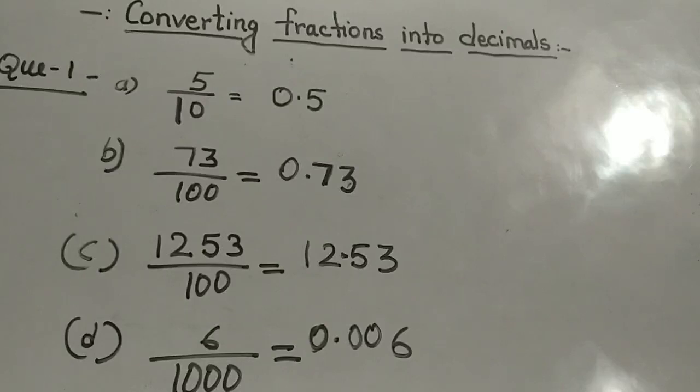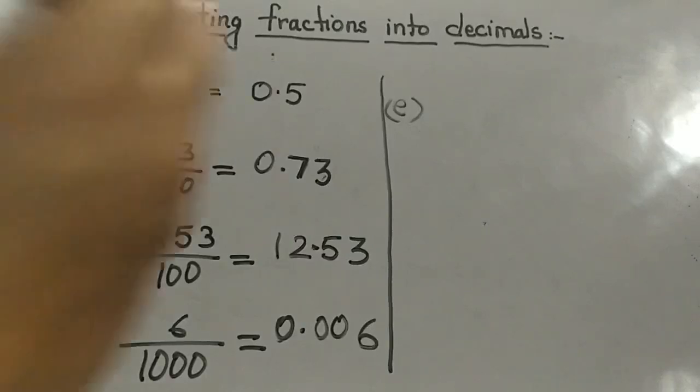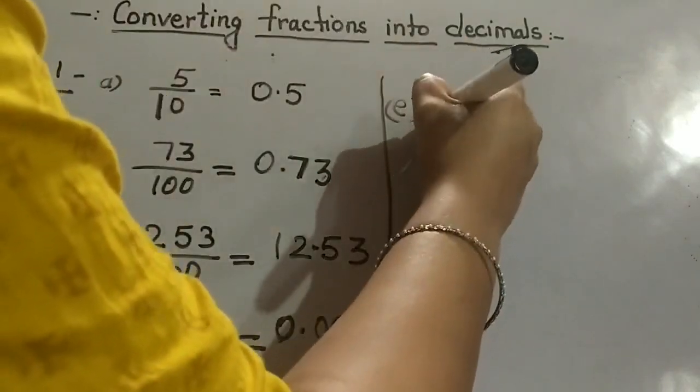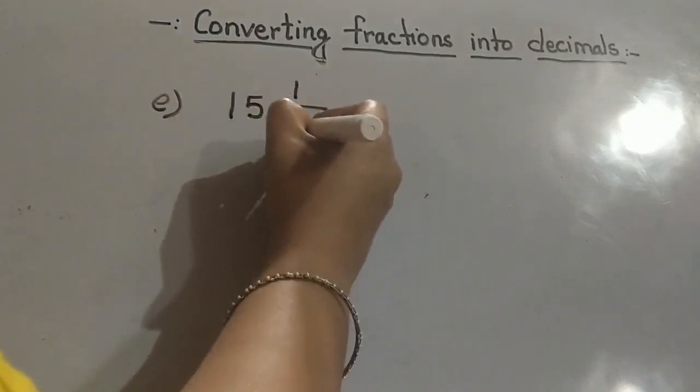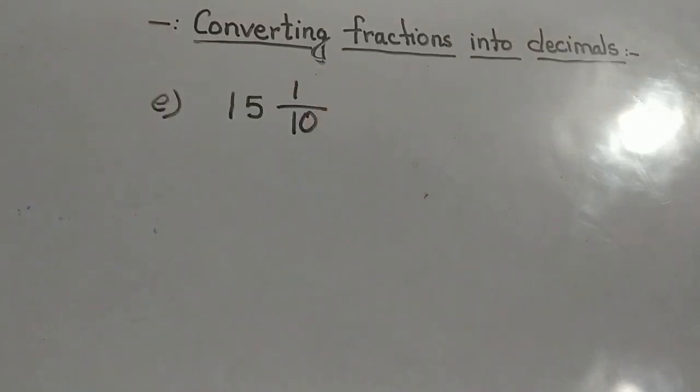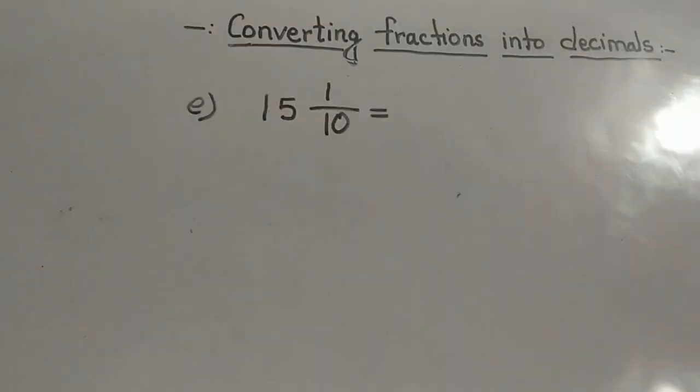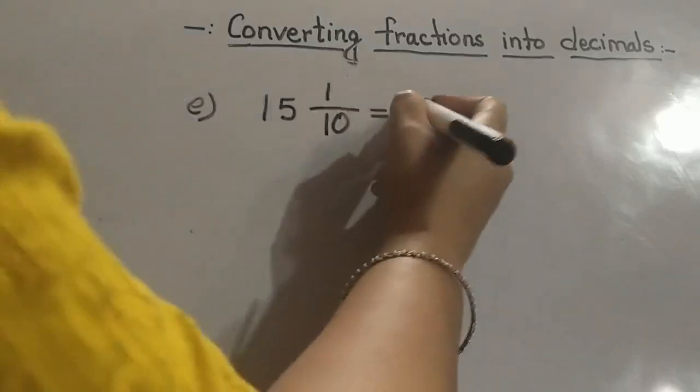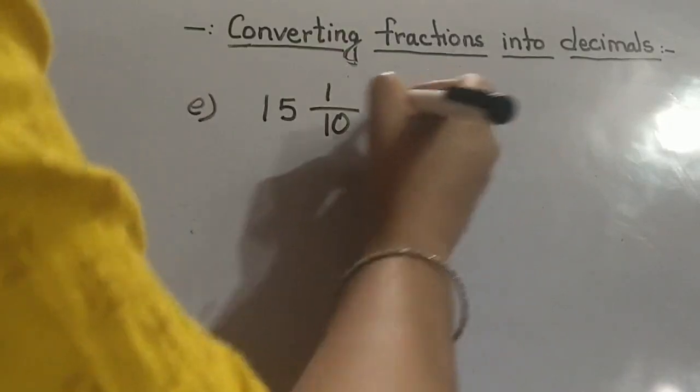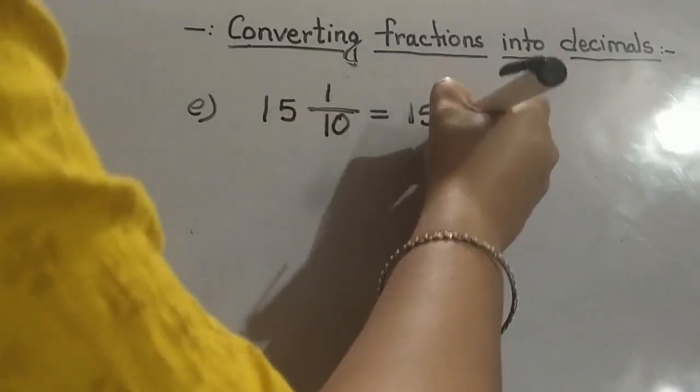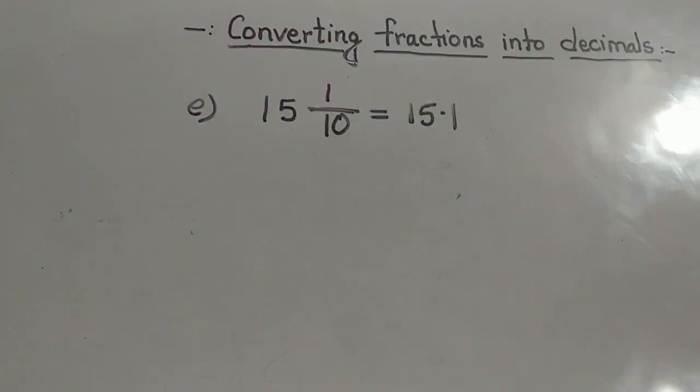Sometimes we are getting questions in the form of mixed numbers, so how to do these numbers? 15 whole 1 upon 10. As you all know, in the decimal also before the decimal the part is called whole number, so whole number will be before the point, and after the point 1 upon 10, 0.1, so 15.1.